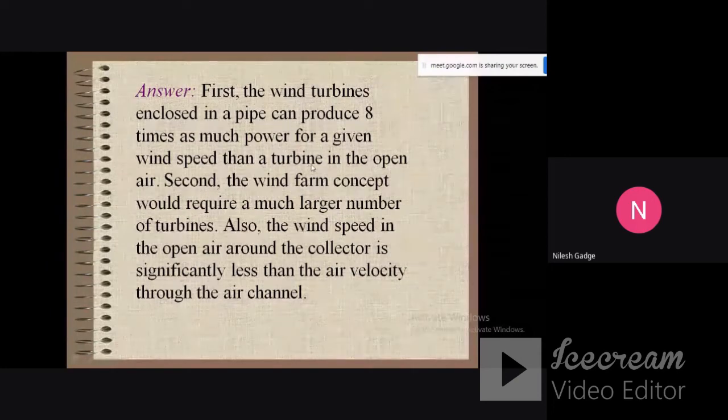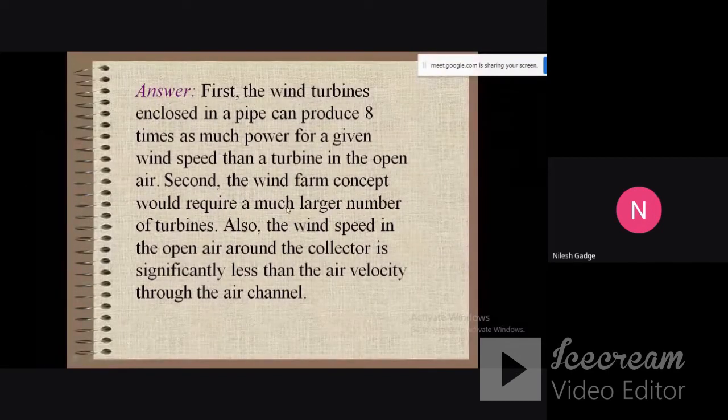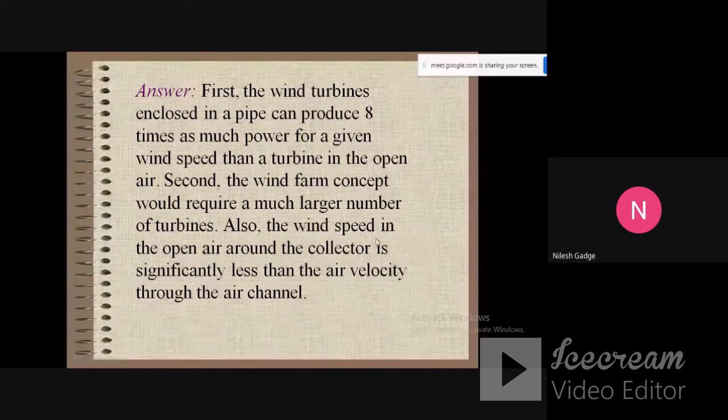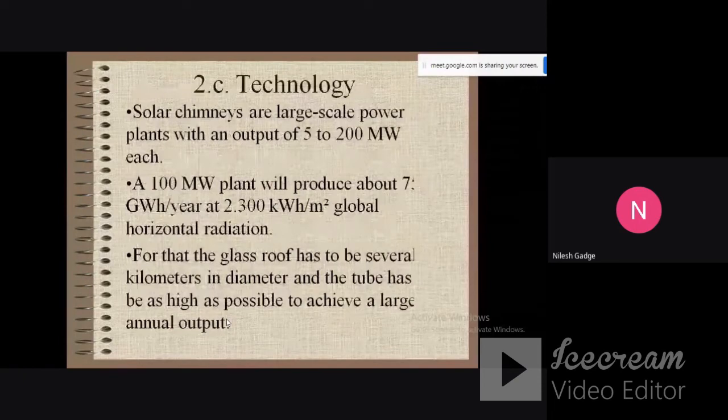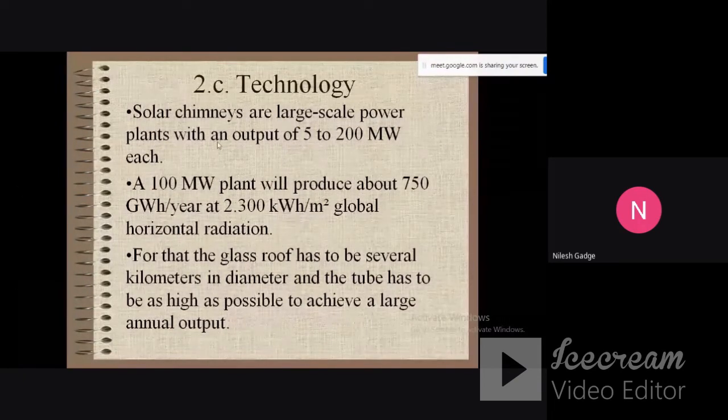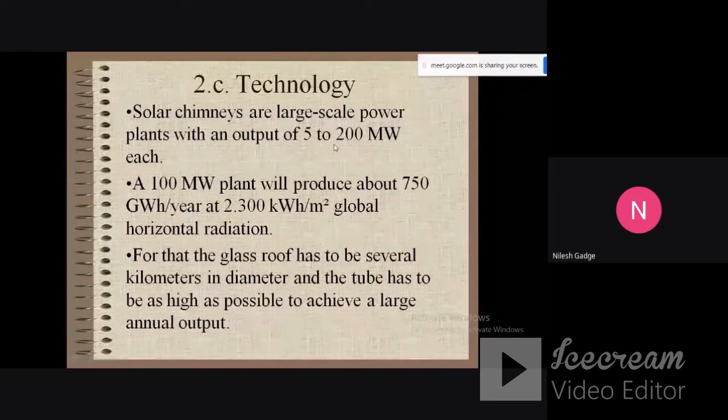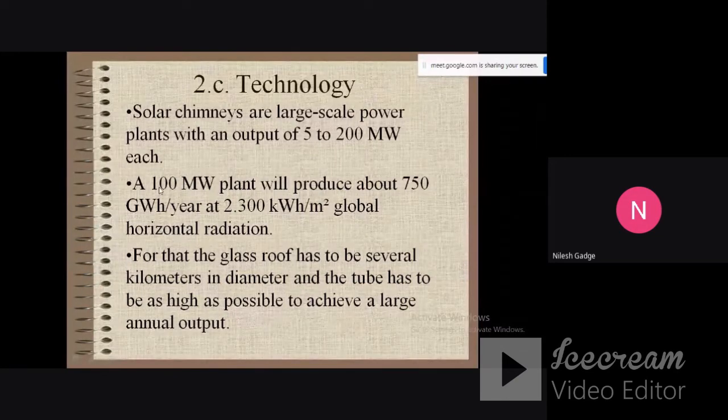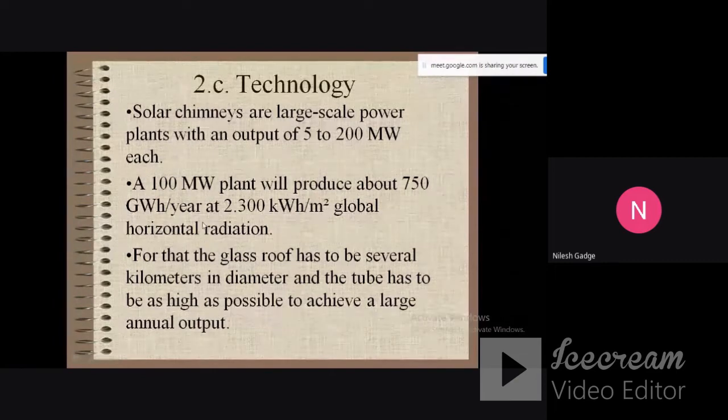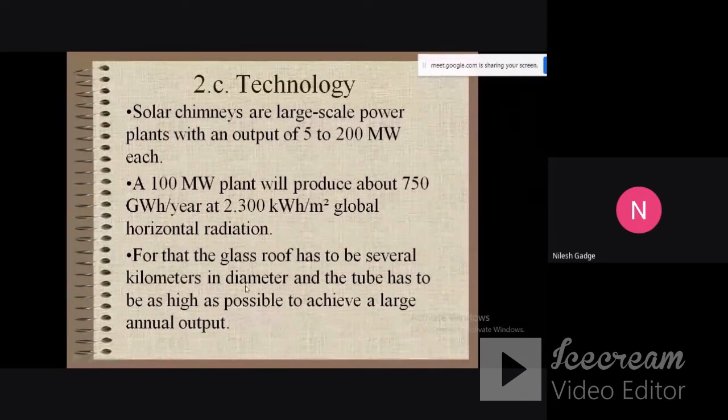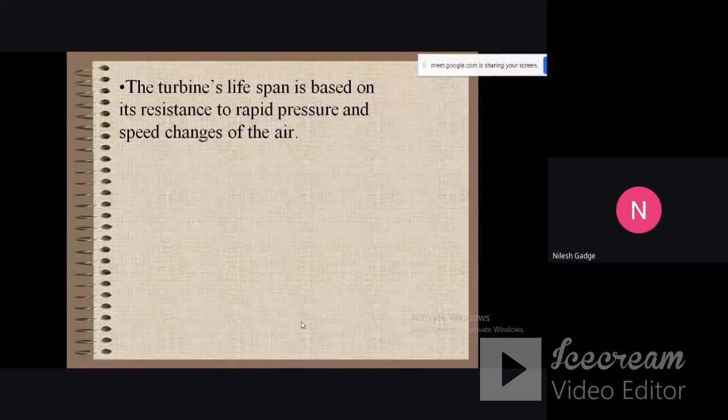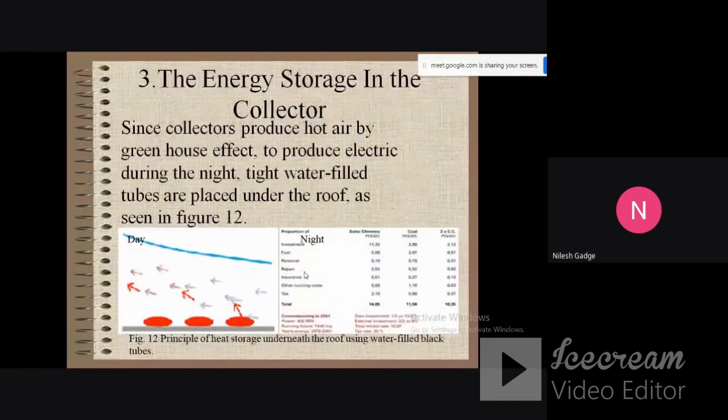First, the wind turbines enclosed in a pipe can produce eight times as much power for a given unit speed than a turbine. Second, the wind farm concept would require a much larger number of turbines. Also, the wind speed in the open air around the collector is significantly less than the air velocity through the air channel. Different technologies using solar chimneys are large-scale power plants with an output of 5 to 200 megawatts each. A 100 megawatt plant will produce about 750 watt-hours at 2.3 kilowatts per square meter for global horizontal radiation. For that, the glass roof has to be several kilometers in diameter and the tube has to be as high as possible to achieve large annual output. The turbine's lifespan is based on its resistance to rapid pressure and speed changes of the air.